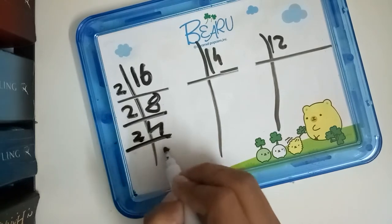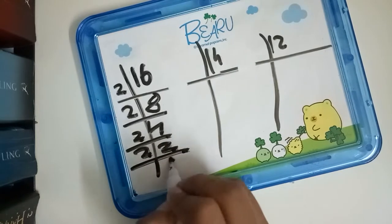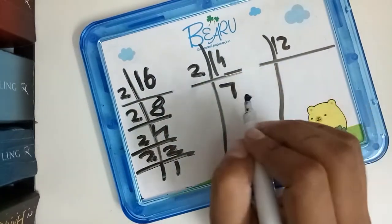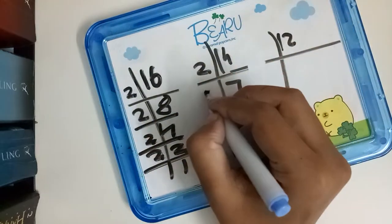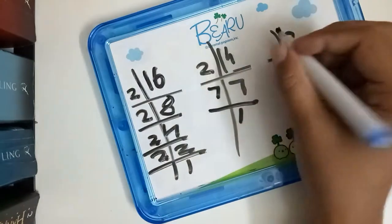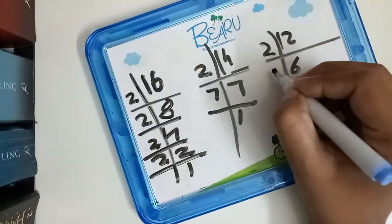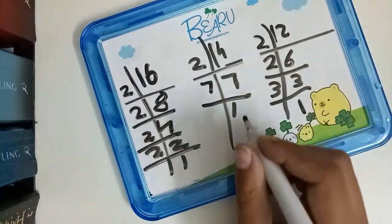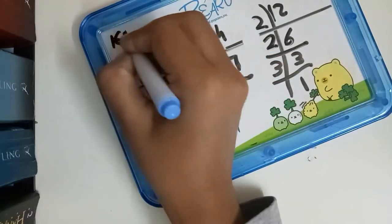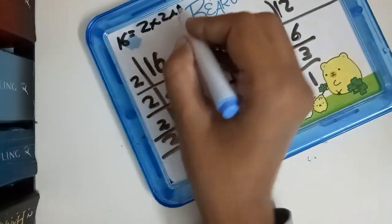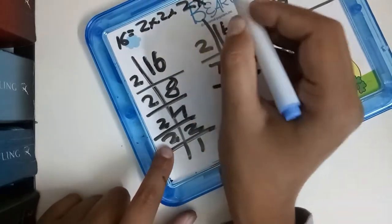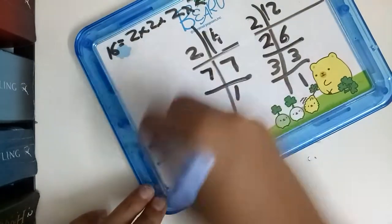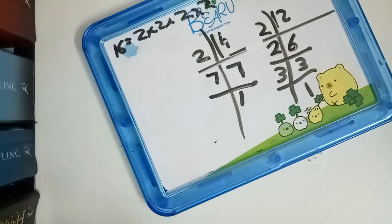And for 14: 14 divided by 2 gives 7. Is 7 divisible by 2, 3, or 5? No, but 7 divides 7. For 12: divided by 2 gives 6, divided by 2 gives 3. So 16 is equal to 2 multiplied by 2 multiplied by 2 multiplied by 2.